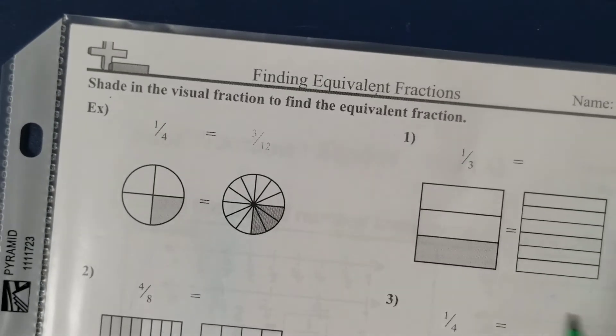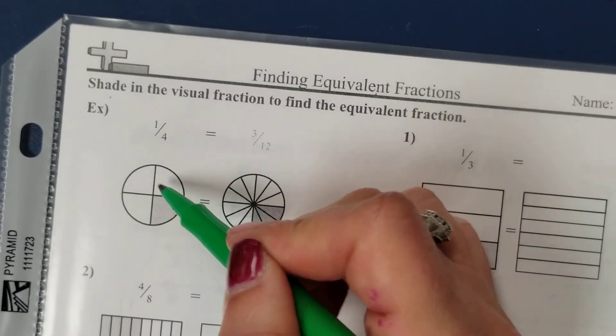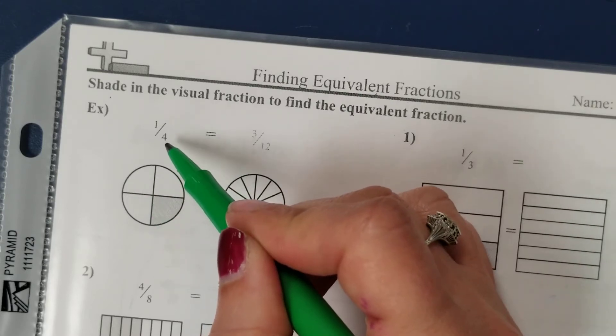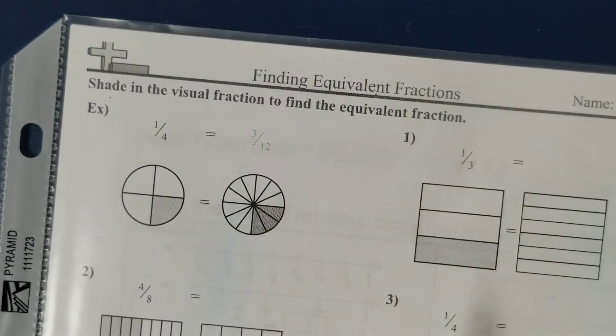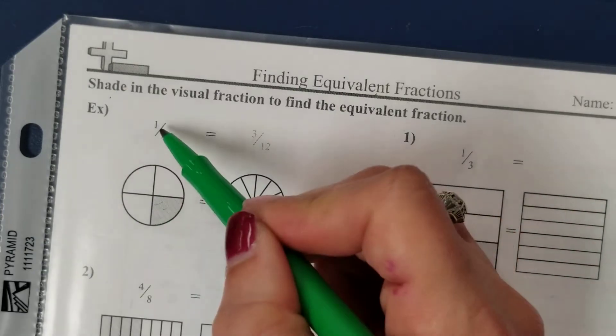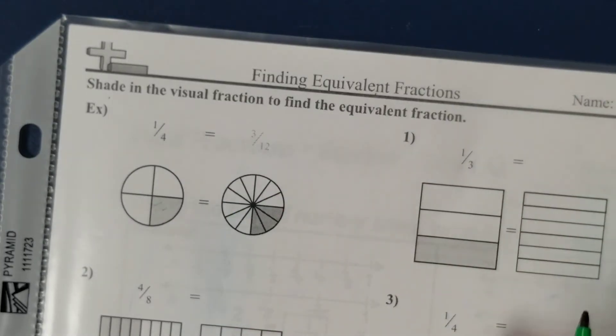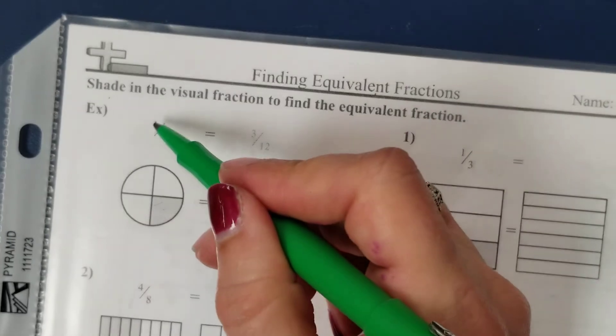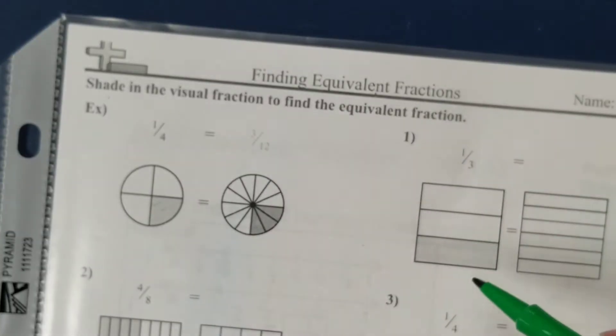In the first example they give us, they have a circle. The circle is broken into four equal parts, so four is in our denominator for that fraction. One of those four parts is shaded here, so we have a one in the numerator. So one out of the four parts is shaded.